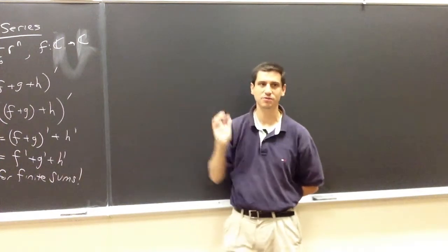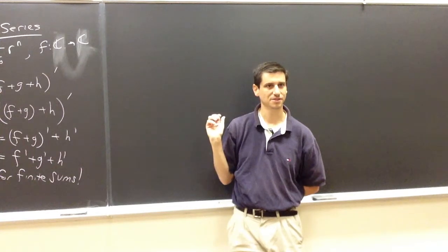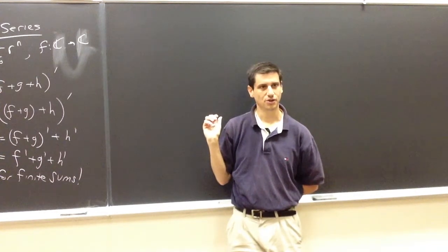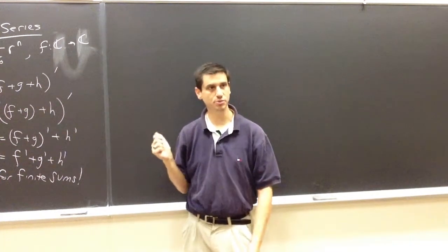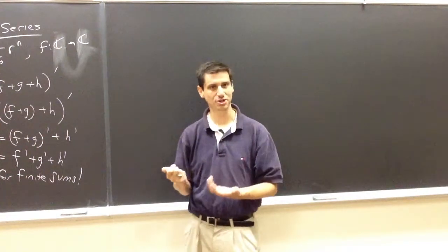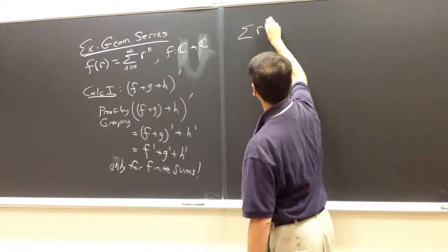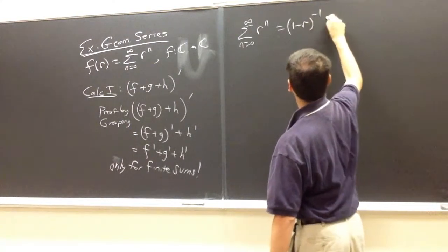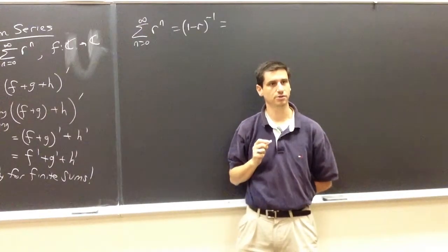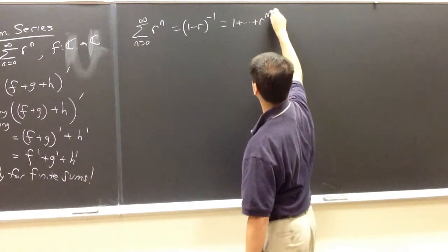For this particular problem, we can attack it elementarily and directly. The geometric series has wonderful properties. The most useful one right now is that it has a closed form. So the sum of r to the n, n goes from 0 to infinity, is (1 minus r) to the negative 1. I can also write it as a finite sum — 1 plus r up to r to the n minus 1 — plus the tail sum n equals N to infinity of r to the n.